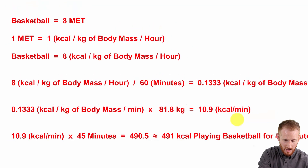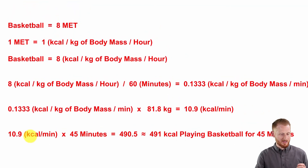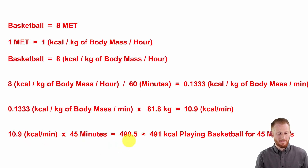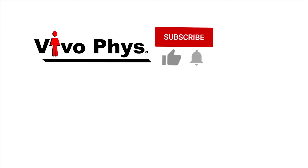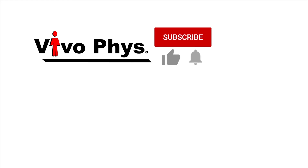Let's do the final step now. We have 10.9 kilocalories per minute, and he did 45 minutes of basketball. Multiply those two out and that gives us 490.5, or roughly 491 kilocalories by playing basketball for 45 minutes. We didn't have a whole lot to go off of, but we did use METs in order to get some useful information. There are other ways that METs are used for exercise prescription — I'll put a link in the description below to a video where I talk about what exactly a MET is, as well as other uses for METs.